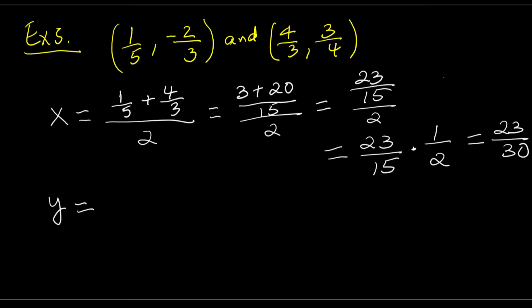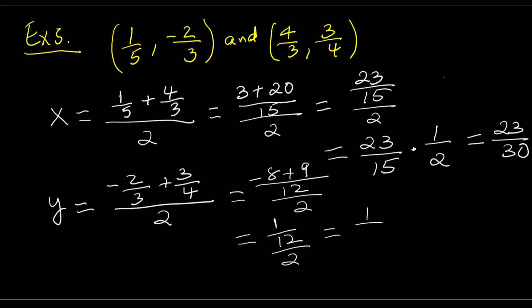Now for the y values, -2/3 plus 3/4 over 2. The common denominator of 3 and 4 is 12. 12 divided by 3 is 4, and 4 times -2 is -8. 12 divided by 4 is 3, and 3 times 3 is 9. Now we have -8 plus 9 over 12. -8 plus 9 equals 1. So we have 1/12. Now divide by 2. 1/12 divided by 2. Using the rule for dividing a fraction by a fraction, we have 1/12 multiplied by 1/2, which gives 1/24. The y value of the midpoint is 1/24.